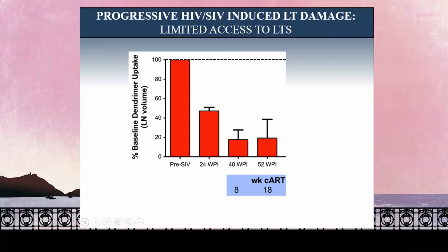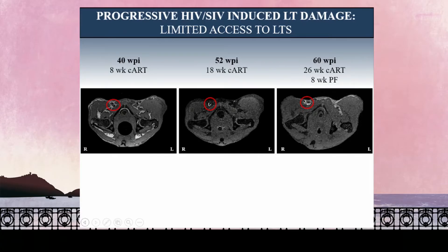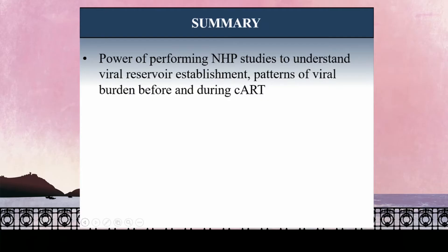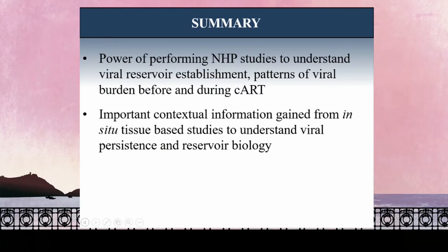How does antiretroviral therapy impact this? It actually gets worse at first — we see no uptake after eight weeks of ART. We begin to see some regeneration after 18 weeks, but it's not statistically different. The total volumetric uptake does not appear to be improved with 18 weeks of antiretroviral therapy. However, when we add an antifibrotic agent, pirfenidone, for just eight weeks, we begin to see slightly improved uptake — and while not statistically significant, there appears to be some regeneration with this antifibrotic therapeutic intervention.